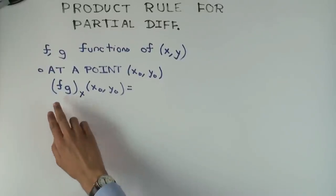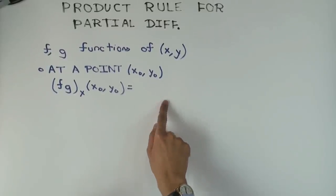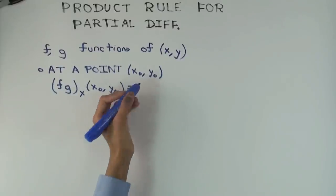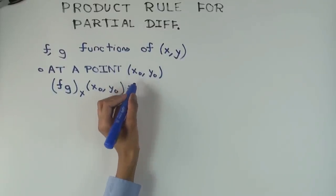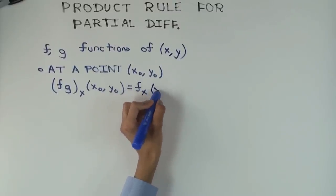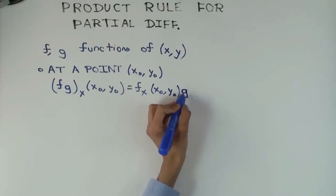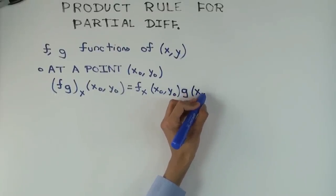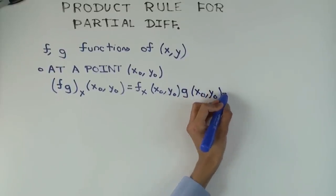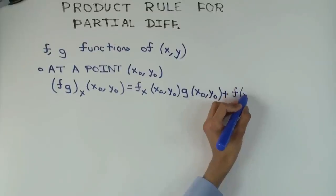What should this be? Well, how does the product rule usually go? It's the derivative of the first times the second, plus the first times the derivative of the second. But now instead of derivatives, I have partial derivatives. So what should this be? f sub x at the point x naught y naught, times g of the point, plus f of the point by g sub x at the point.